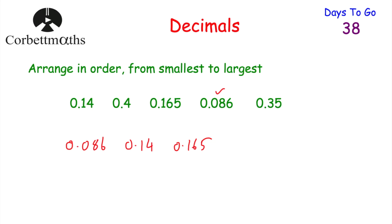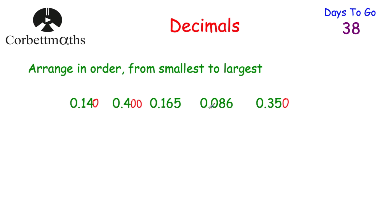Another way you could do that question is to make the numbers the same length — give them the same number of decimal places. The longest one has three decimal places, so add zeros to the end of the shorter numbers. Now they've all got three decimal places, and you can compare them quickly and easily to see 0.086 is smallest, then 0.14, then 0.165, then 0.35, and then 0.4 is the biggest. Either approach is fine as long as you put them in order from smallest to largest.